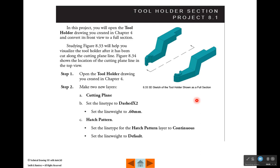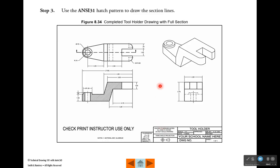The first assignment that you're going to come across in Chapter 8 is where we take the tool holder drawing that we've already created and we open it up. We create two new layers - one called cutting plane. We set the line type on that to dashed x2 and the line weight to 0.6 millimeters, so we're going to get a heavy dashed line. The hatch pattern - we're going to make a layer called hatch pattern, set it to continuous and set the default line weight to it.